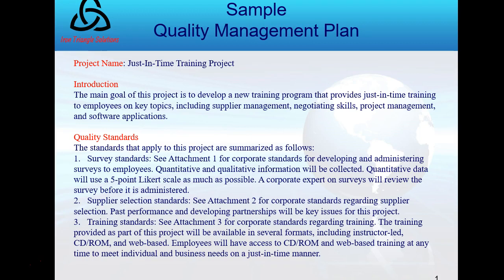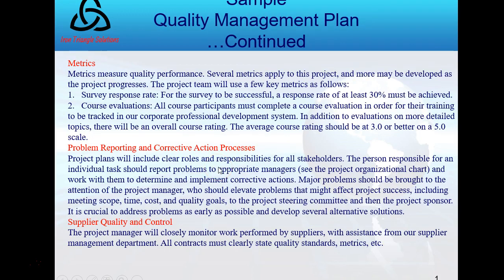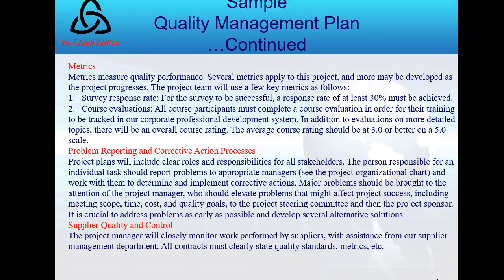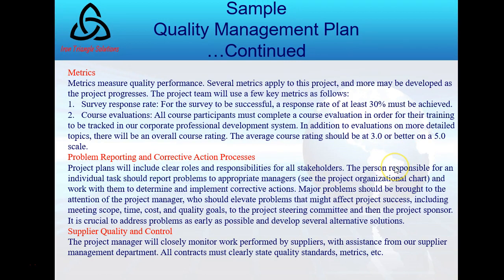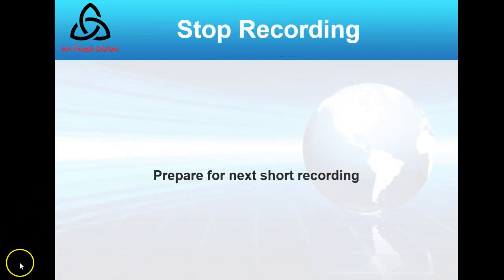Now that we have an output — the Quality Management Plan — what would one look like? I've put together a sample in the next few slides. It would include a name and introduction, quality standards, metrics, reporting, problem reporting, a corrective action process, and supplier quality control. I just wanted to give you a sample index of what I think makes a good Quality Management Plan. That's it for this section — let's take a break and come right back.